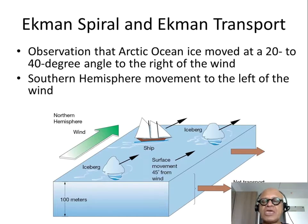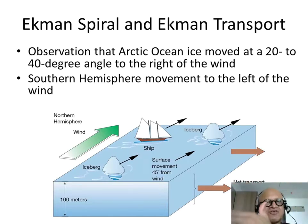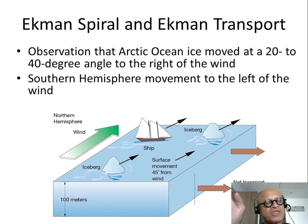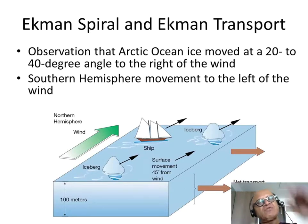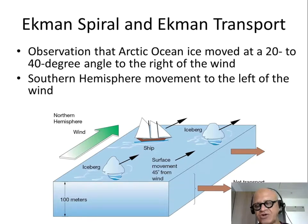If you have winds blowing from the bottom of the screen towards the north in the northern hemisphere, the ocean will be dragged by the winds, but as the ocean begins to move, it begins to experience Coriolis — it begins to drift to the right of the direction of the winds producing the current. We also need to explain why the entire transport is going to be almost at 90 degrees to the winds, and that's where the Ekman spiral comes in.